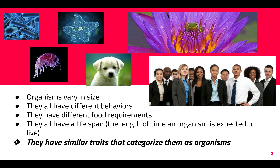Organisms vary in size — they can be as small as bacteria, an amoeba, or even plankton, or as big as a puppy, humans, a flower, or a frog. They vary in size, they all have different behaviors, they all have different food requirements — plants don't eat the same way that humans eat — and they all have a lifespan, which is the length of time an organism is expected to live. They all have differences, but they also share things in common that categorize them as an organism, and we're going to go through that.